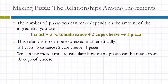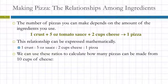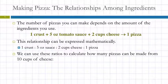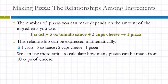We can use those ratios to figure out — if we had ten cups of cheese, how many pizzas could we make? The math here is very simple, and that's intentional. You can just figure out that ten cups of cheese means five pizzas. But what I'm trying to teach you is how to use the numbers in the relationship to make conversion factors, because we're very quickly going to jump into things that you're not going to be able to reason out in your head.